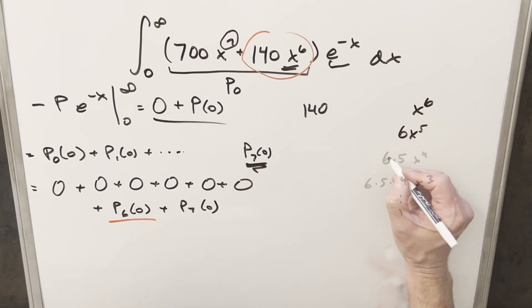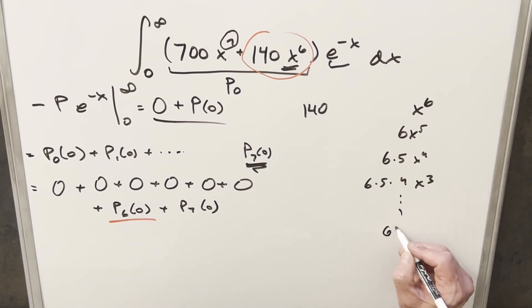you get 6x^5. You'll notice just by differentiating over and over again, what's going to happen eventually is you get down to 6 factorial times x, and then doing it one more time, you just get 6 factorial. So we just have this idea that for x^n, when n is a positive integer, you differentiate that, and eventually at some point, you're going to have n factorial.